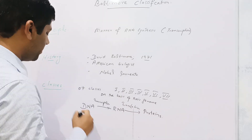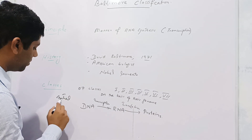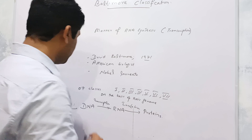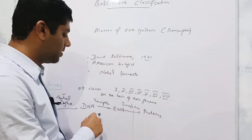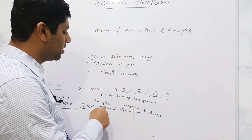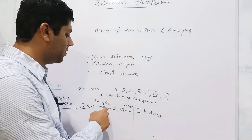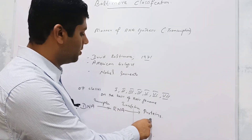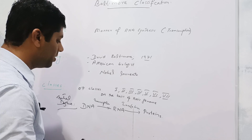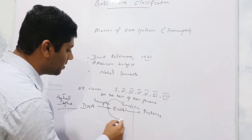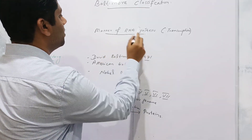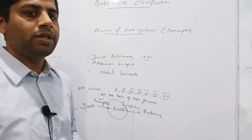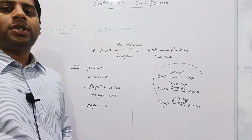We should also keep in mind the central dogma of biology. The central dogma states that the DNA of organisms is first converted into messenger RNA — a process called transcription — and then this messenger RNA is used to synthesize proteins, a process called translation. This technique of messenger RNA synthesis is basically the basis of the Baltimore Classification System.